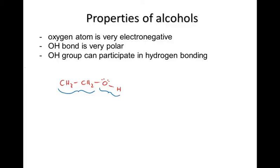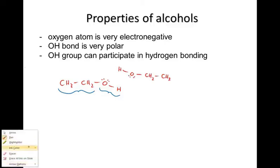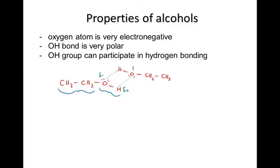And it also means that an alcohol molecule can form hydrogen bonds. So if I draw another ethanol molecule over here like this, then it's possible for hydrogen bonding to occur between, say, the oxygen of one molecule and the hydrogen of another, or the hydrogen of one molecule and the oxygen of another, because the oxygens have that little delta negative charge and the hydrogens have that little delta positive charge, and they attract each other.